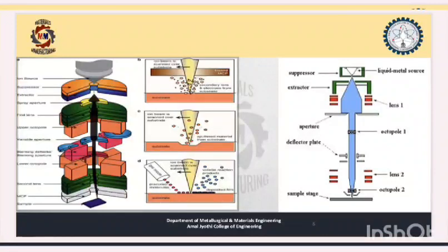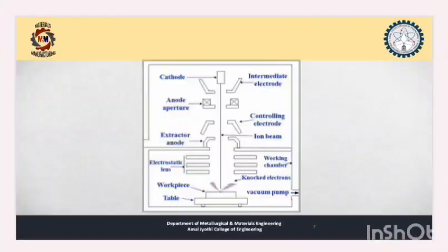From this figure we can easily understand the process. A tungsten electrode is used, and inert gas is introduced. This inert gas will collide with the electrodes, and the ions are directed toward a vacuum chamber where the workpiece is placed.